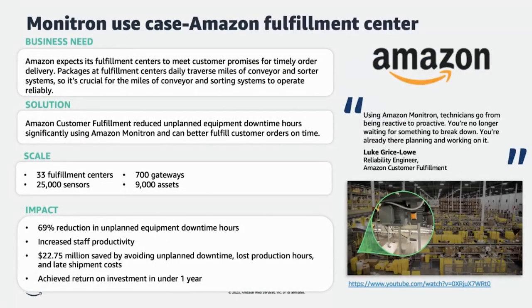Now shifting gears to our internal customers — we don't just build the solution, but we are also users of it. An important proof point and case study for Amazon Monitron is its utilization internally at our fulfillment centers. The fulfillment centers are a maze of conveyors powered by motors. If those conveyors go down due to a faulty motor, that has a direct impact — packages you order from Amazon could get delayed in delivery. At the fulfillment centers, we have seen a 69% reduction in unplanned downtime, an increase in staff productivity, as well as savings of over $22 million by avoiding unplanned downtime, loss of production hours, and late shipment costs. We have 33 fulfillment centers where we have deployed over 25,000 sensors and 700 gateways to monitor 9,000 assets.